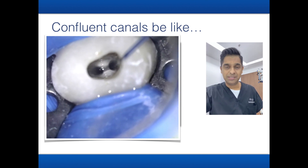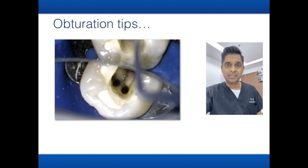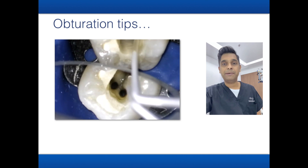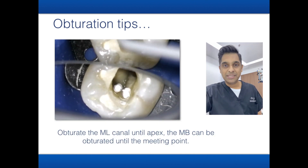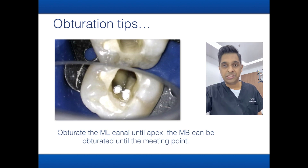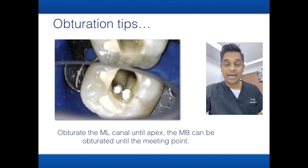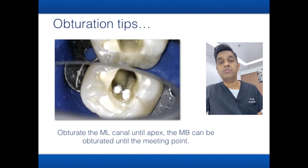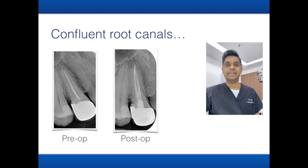For obturation of confluent canals, use a single cone technique with bioceramic sealer. Pump bioceramic sealer into the mesial lingual canal — sealer can also be seen coming out of the mesial buccal canal. Place the single cone in the mesial lingual canal all the way to the apex and shear it off. Obturate the mesial buccal only until the merging point as determined earlier. Alternatively, inject GP to that point, pack, and then backfill and pack again.